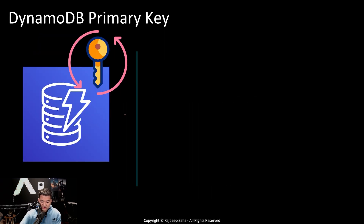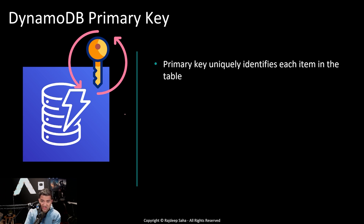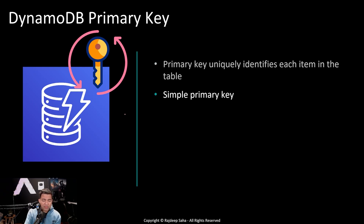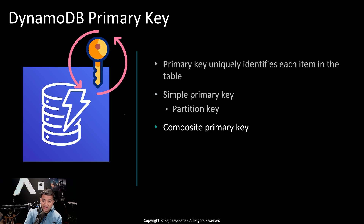Let's get started. First, let's understand DynamoDB primary keys. As the name suggests, the primary key uniquely identifies each item in the table. There are two kinds of primary keys in DynamoDB. One is the simple primary key, where there is only one field — we call this the partition key. The other is the composite primary key, which consists of two fields: the partition key and the sort key.